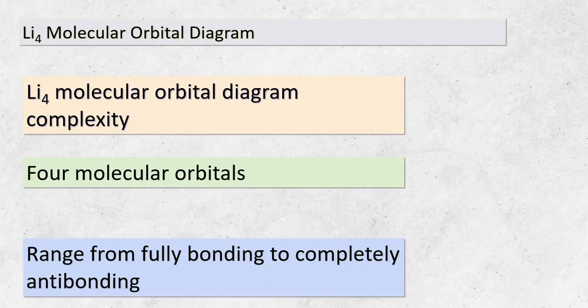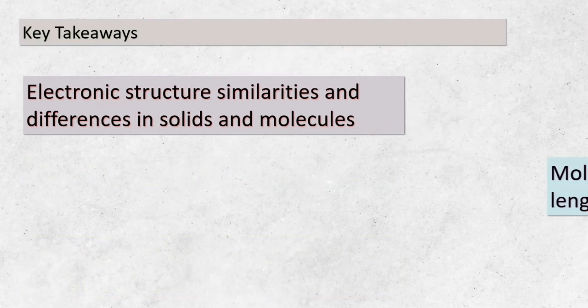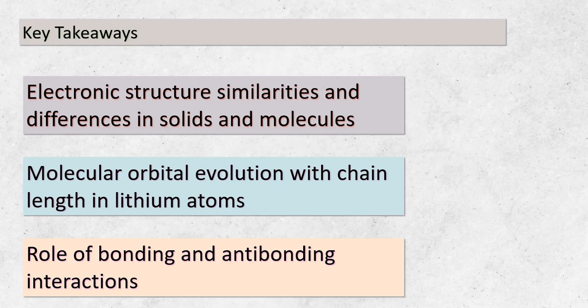Let's delve into the intriguing realm of Li₄. We're met with not two, but four molecular orbitals. These orbitals span a spectrum of energy levels, from the lowest — which exhibits entirely bonding interactions with zero nodal planes — to the highest, where every interaction is anti-bonding, featuring three nodal planes. We've journeyed through electronic structures in both crystalline solids and molecules. Our focus on the molecular orbital diagram of lithium chains revealed the intricate dance between bonding and anti-bonding interactions. These principles lay the foundation for understanding the behavior of matter at the atomic and molecular levels.